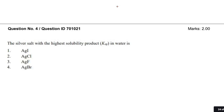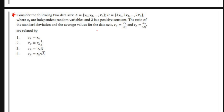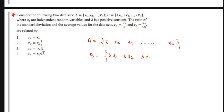The next question is from data analysis. It says: consider two data sets — set A with X1, X2, X3, ..., Xn, and set B with λX1, λX2, λX3, ..., λXn. The Xi are independent random variables and λ is a positive constant. They ask for the ratio of standard deviation to average for set B (σB / mean B) relative to that of set A (σA / mean A).